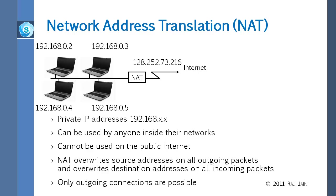You need at least one public address to go on the internet. At home you have one public address; WashU has 2 raised to 16 public addresses. Universities that joined early were lucky — some got 2 raised to 16, and some like Harvard probably got 2 raised to 24 addresses. As universities joined later, they received fewer: 2 raised to 8, and eventually just one address.